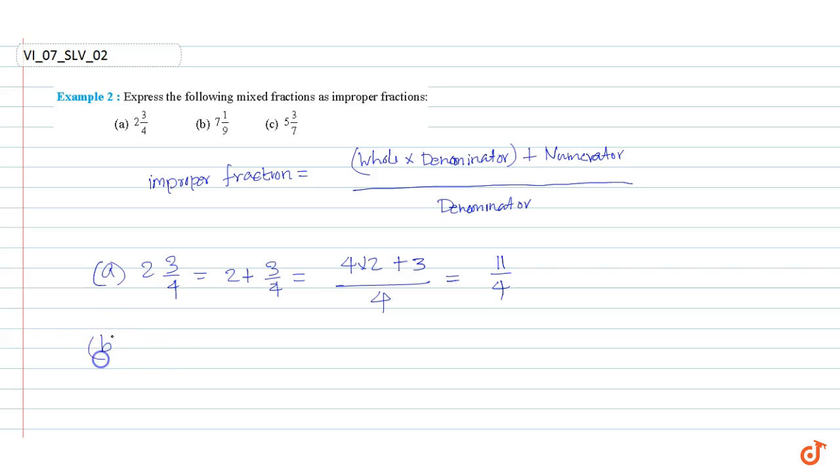Part B: 7 and 1/9, which is equal to 7 plus 1/9, which is equal to (7 times 9 plus 1) divided by 9, which is equal to 64/9.